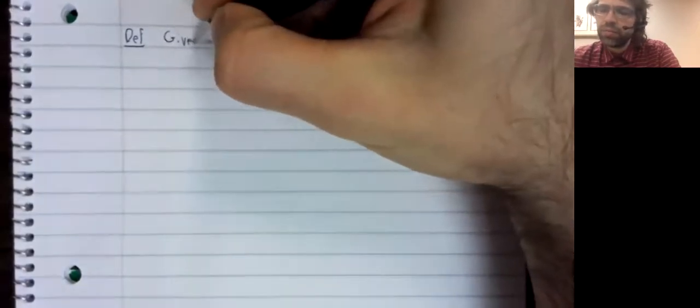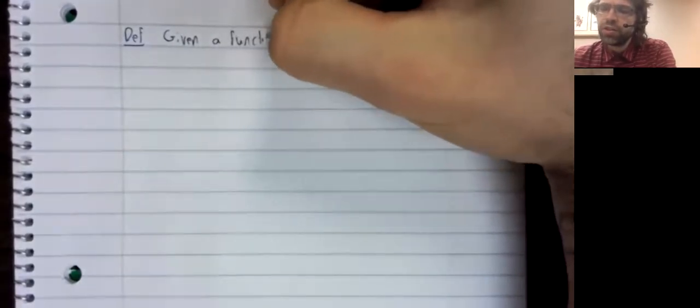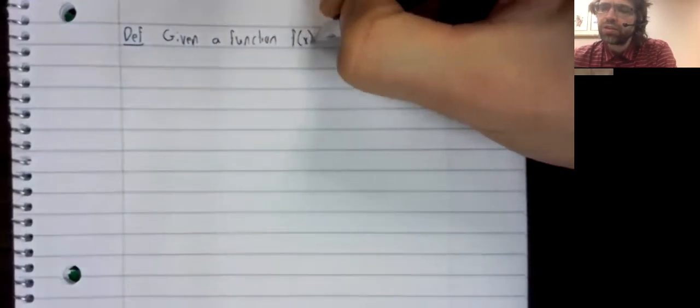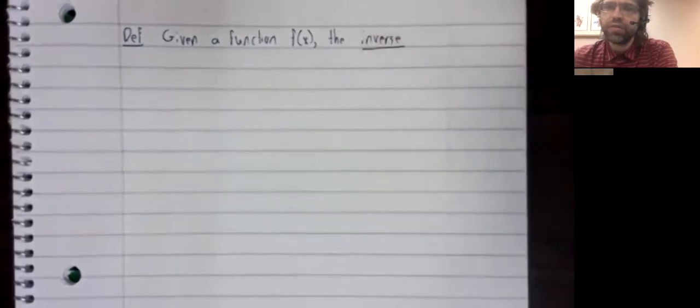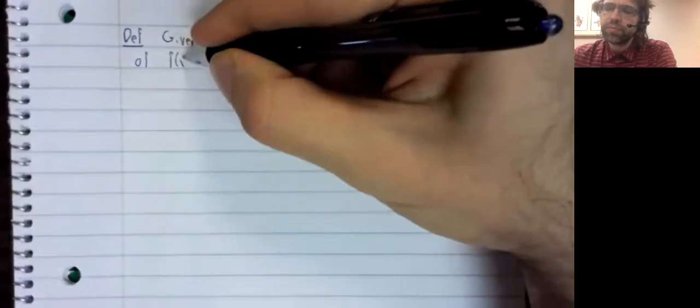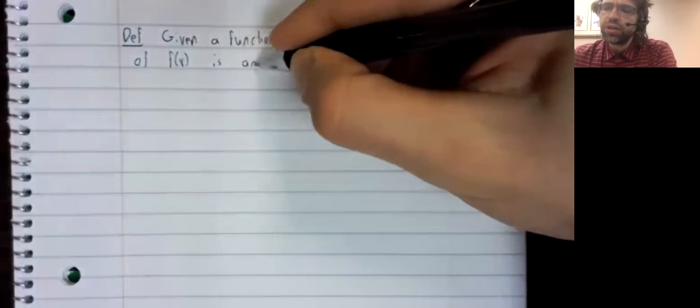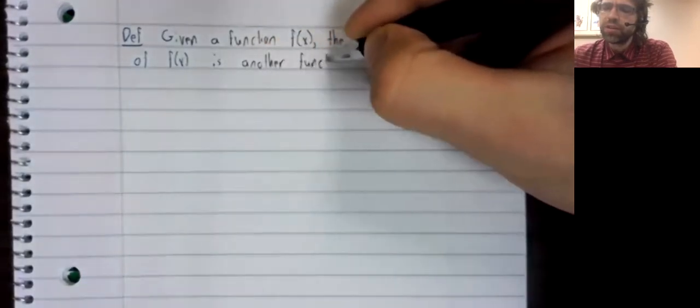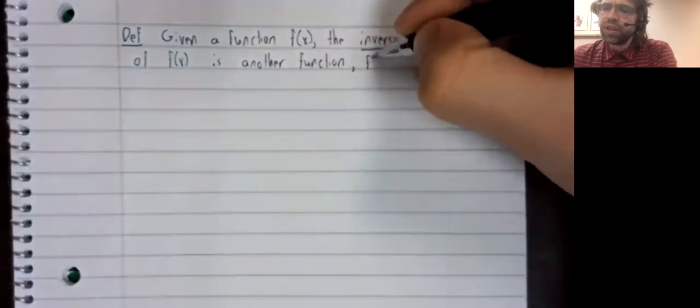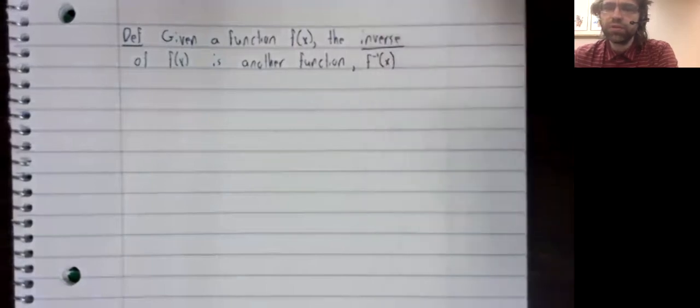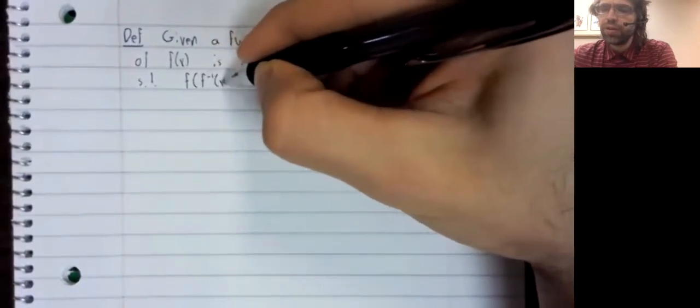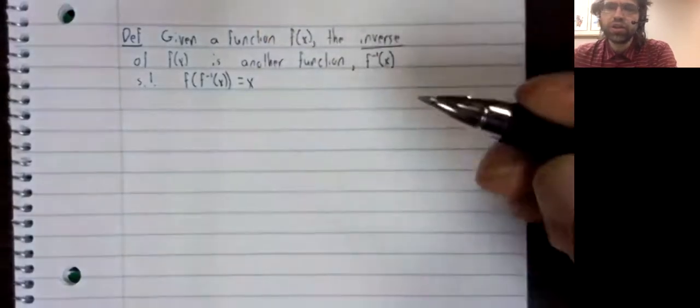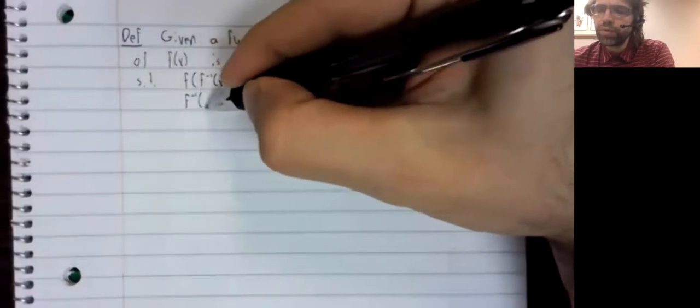Definition. Given a function f of x, the inverse of that function is another function written as f with a negative one in its subscript, such that when you compose f with its inverse, the two functions undo one another.